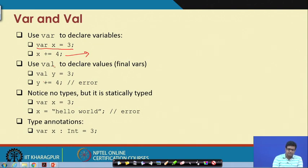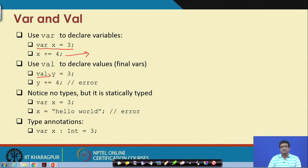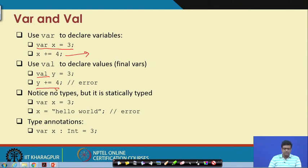However, you can also use the keyword val, which is used to declare values or constants — in Java these are called constant variables. For example, if you say val y = 3 and then try to do y += 4, Scala will throw an error because you cannot change a constant. This brings in the notion of immutability.